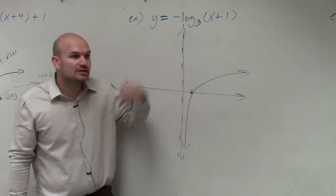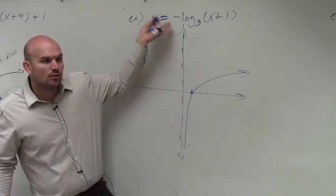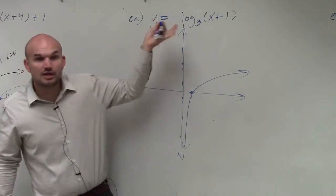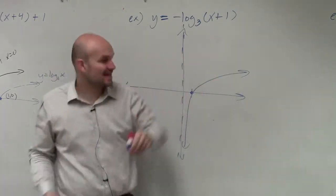Now let's look at the transformations. The transformations is we have this negative here. What does the negative tell us about the graph? It's reflecting over which axis? X-axis.